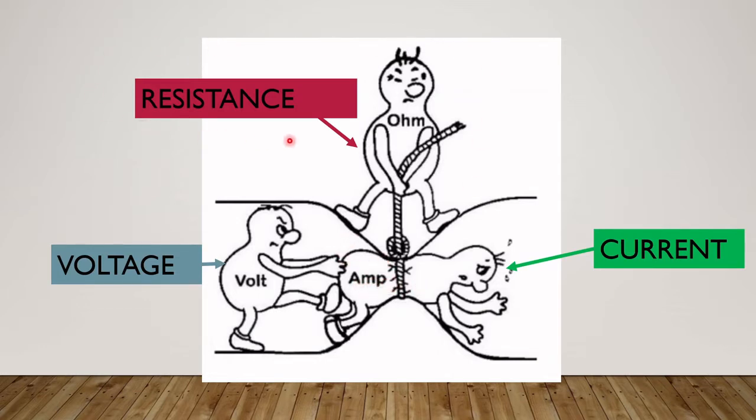And up on the top is the third unit, and that is resistance, and resistance is measured in ohms. And so think of resistance as what is blocking or restricting the flow of electrons.